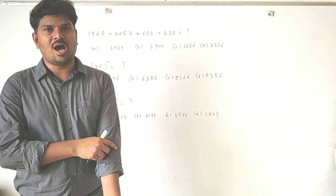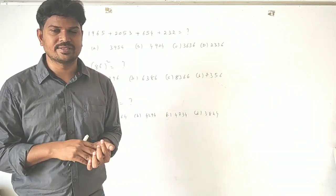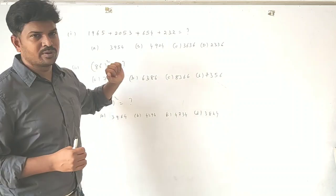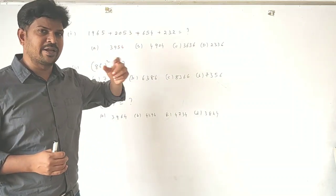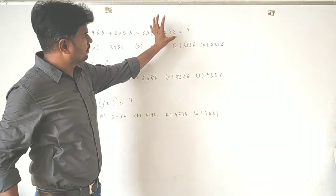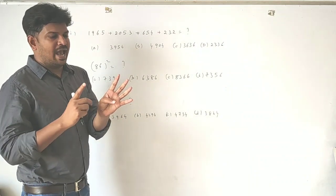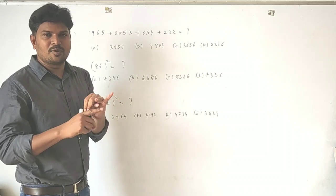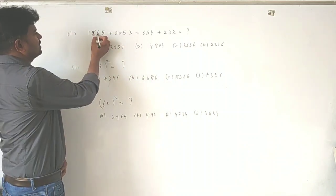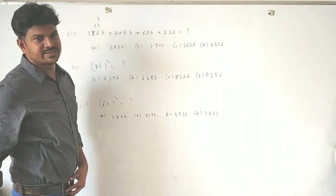Let's see an application of digital sum in objective-type questions. Most company exams involve objective-type questions requiring speedy calculations, and we can apply the digital sum process here. Remember the rule: add individually, ignore 9, ignore sums of 9, and repeat until you get a single digit. For the first number, 9 is present — ignore it. Then 6 plus 5 is 11, plus 1 is 12, and 1 plus 2 equals 3. So the digital sum is 3.